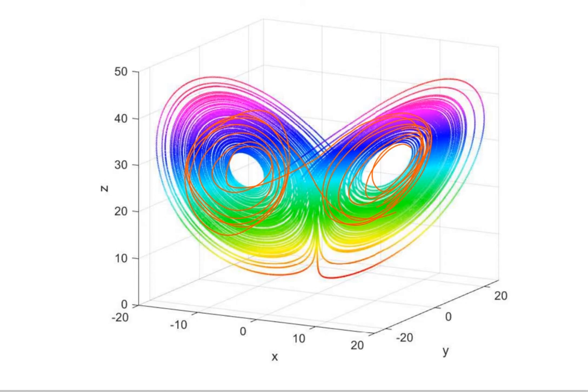It turns out if you start with other initial conditions — maybe somewhere way over here — you will still see the same picture. It will very rapidly fall onto it and then do the same thing, jumping back and forth. This is an example of a chaotic strange attractor.